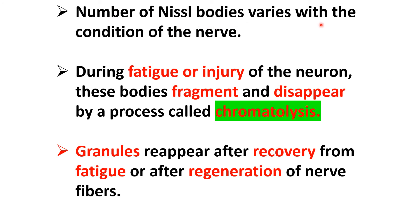The number of Nissl bodies varies with the condition of the neuron. During fatigue or injury, these bodies fragment and disappear by a process called chromatolysis. Chromatolysis is the process by which Nissl bodies are fragmented and disappear from the cell body due to injury or fatigue. The granules reappear after recovery from fatigue or after regeneration of the nerve fibers.